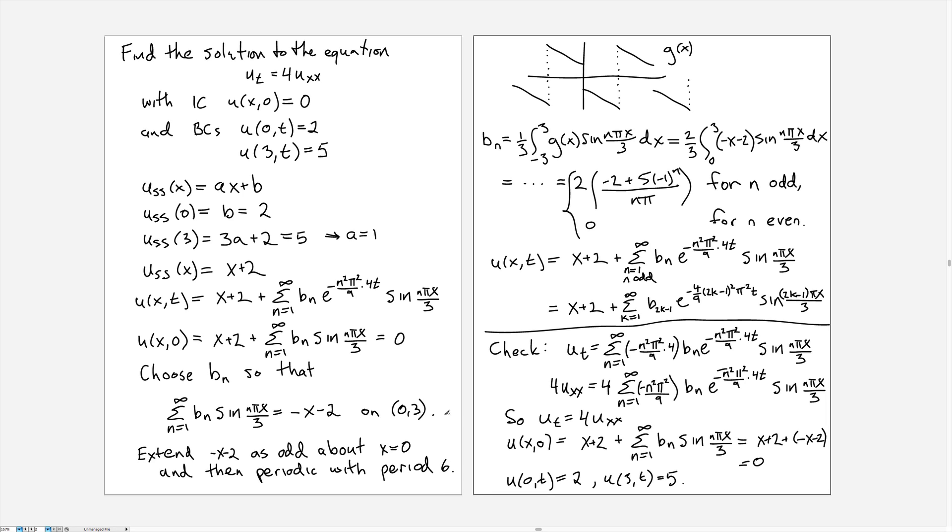So here I've got a couple examples worked out. Here is the solution to the heat equation with an initial condition of 0 everywhere, with boundary conditions 2 and 5. That's the value Dirichlet boundary conditions 2 and 5.